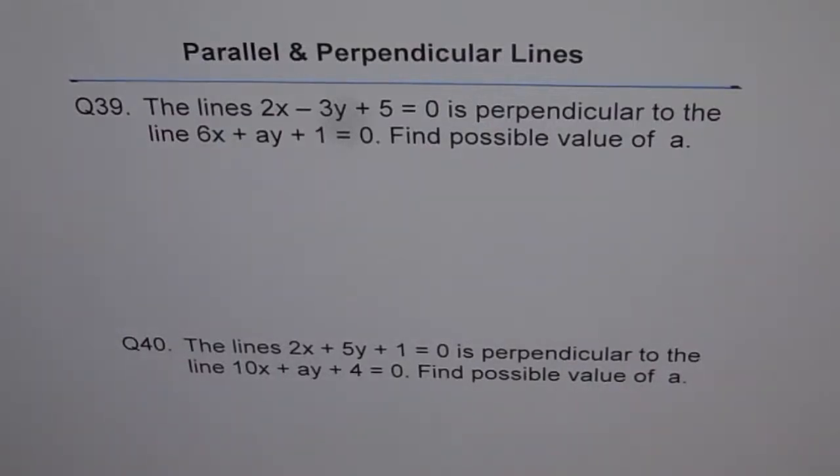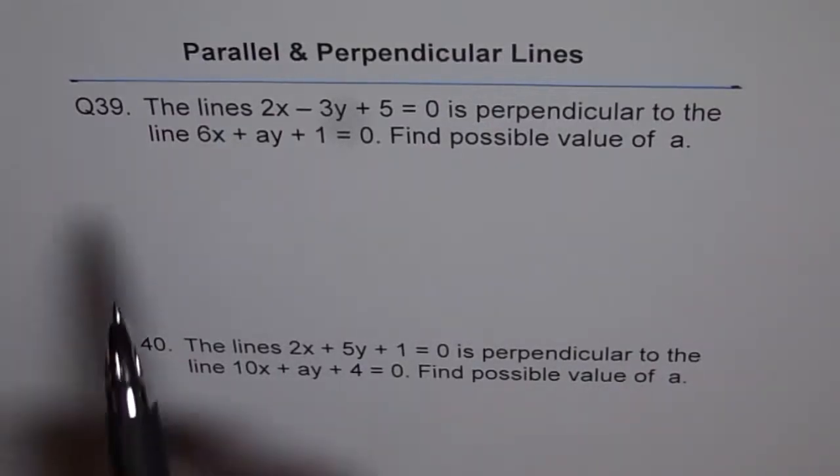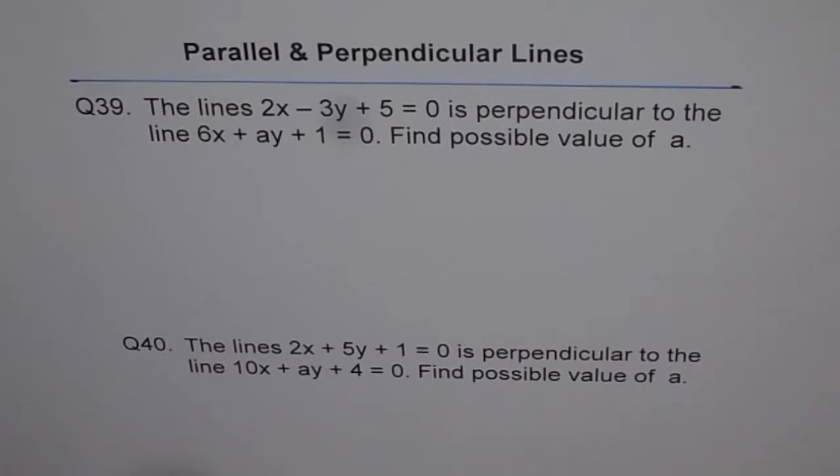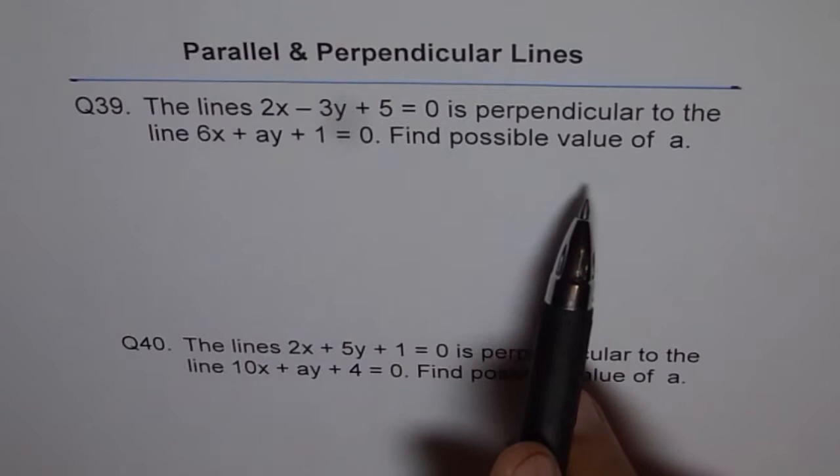Parallel and Perpendicular Lines, question 39. The lines 2x minus 3y plus 5 equals 0 is perpendicular to the line 6x plus ay plus 1 equals 0. Find possible value of a.